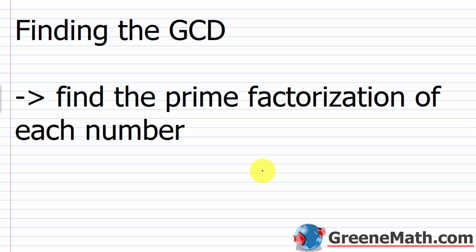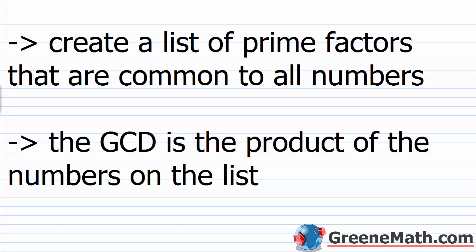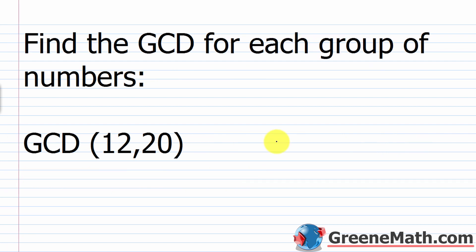You will have committed the steps to your memory. For finding the greatest common divisor, the first thing you want to do is find the prime factorization of each number — use a factor tree or any method you're comfortable with. Next, create a list of prime factors that are common to all numbers — it has to be common to all numbers, not just most of them. Then take that list and form the product of the numbers on it. That product is your greatest common divisor.